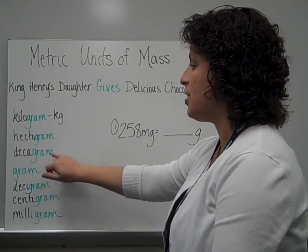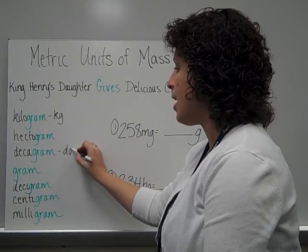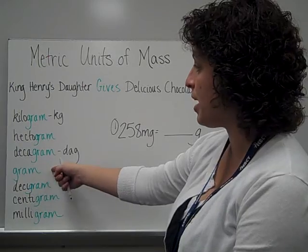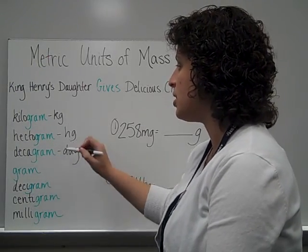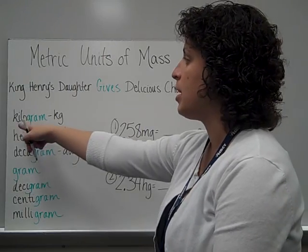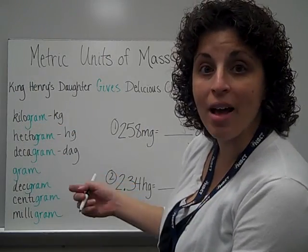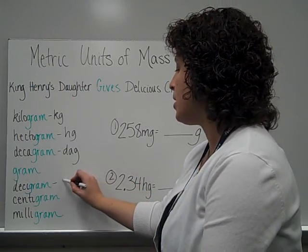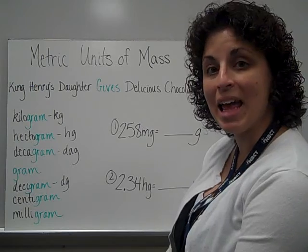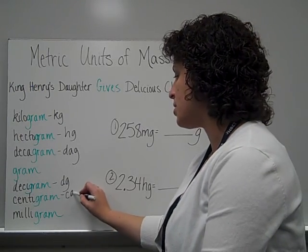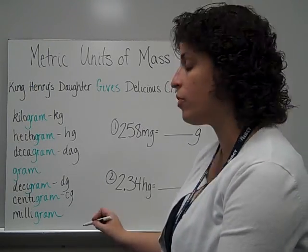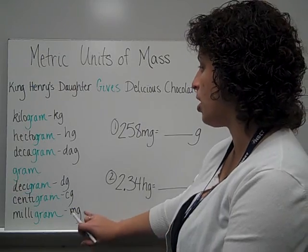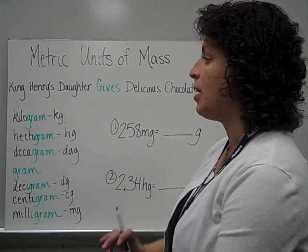Just like before, a decagram — DAG for an abbreviation — is made up of 10 grams. A hectogram, HG, is made up of 100 grams. A kilogram is made up of 1,000 grams. Decigram, DG, is one-tenth of a gram. Centigram is CG, one one-hundredth of a gram, and milligram is MG. Milligram, gram, and kilogram are probably the ones we see most often.